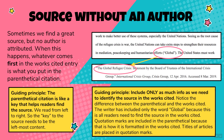Keep in mind the guiding principle: include only as much information as needed to identify the source in the Works Cited. The writer includes only the word 'Global' because that is all readers need to find the source. Quotation marks are included in the parenthetical because titles of articles are always placed in quotation marks, and that doesn't change in a parenthetical citation. You take the main keywords from the article title and put only those in parentheses — the entire article title is not necessary as it becomes too distracting.